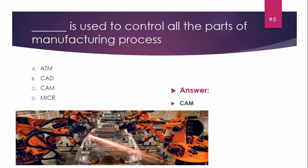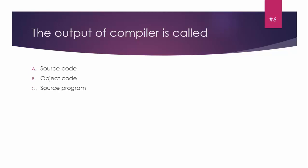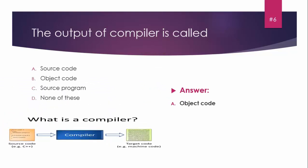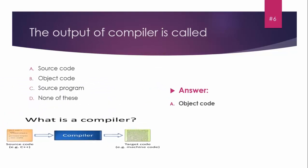MCQ number six: The output of compiler is blank. A compiler is a translator used to translate high-level language into low-level language. Options: A) Source code, B) Object code, C) Source program, D) None of these. The correct option is Object code. You can see in the diagram that the compiler converts source code into object code.